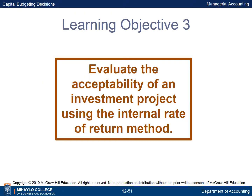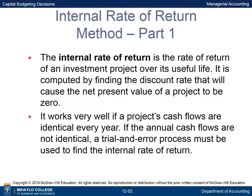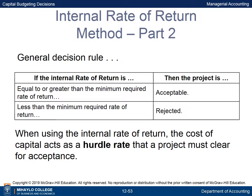Learning Objective 3 is to evaluate the acceptability of an investment project using the Internal Rate of Return method. The IRR is the rate promised by an investment project over its useful life, computed by finding the discount rate that causes the NPV to be zero. It works well when cash flows are identical every year; otherwise, a trial-and-error process is needed. If the IRR is equal to or greater than the minimum required rate of return, the project is acceptable; if less, it is rejected. The cost of capital acts as a hurdle rate.